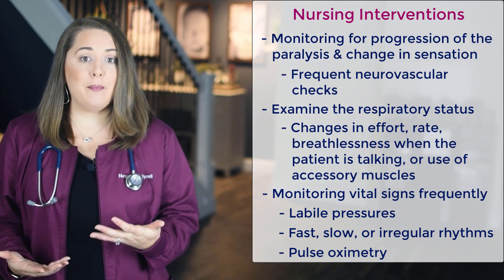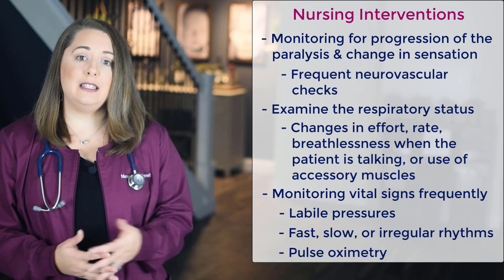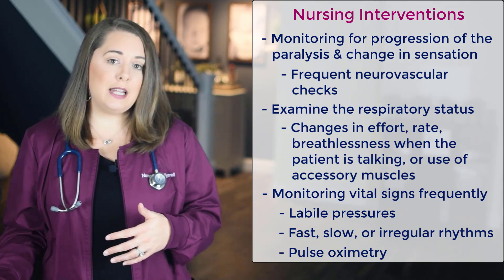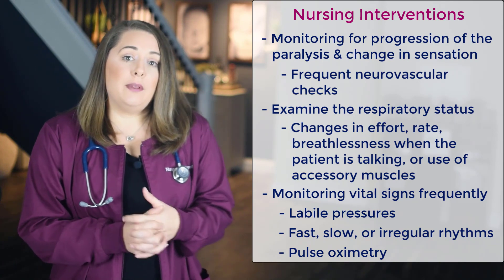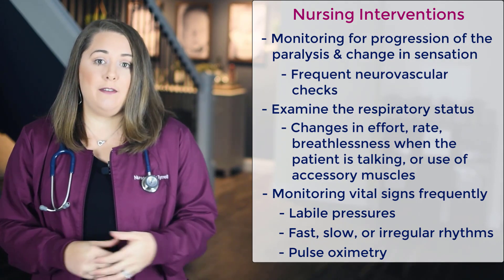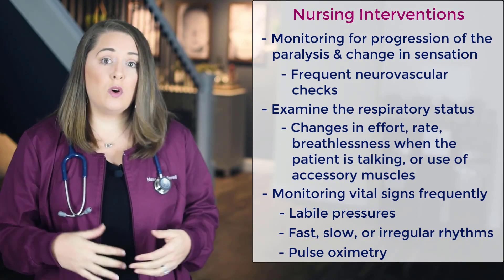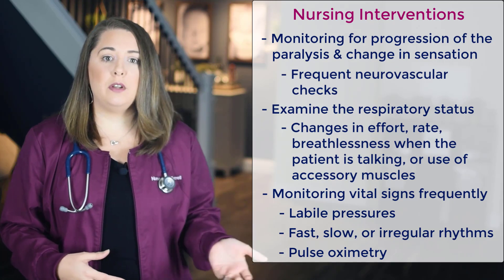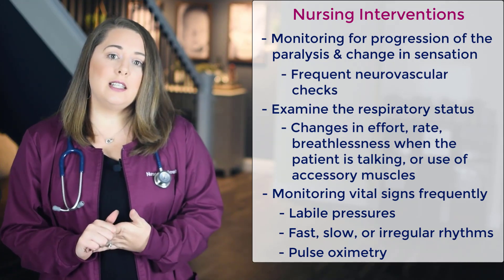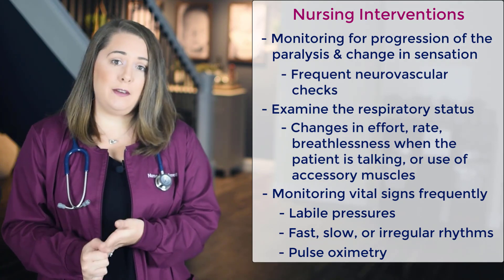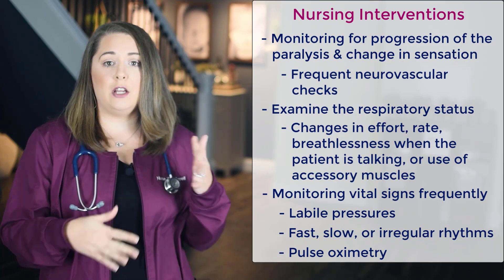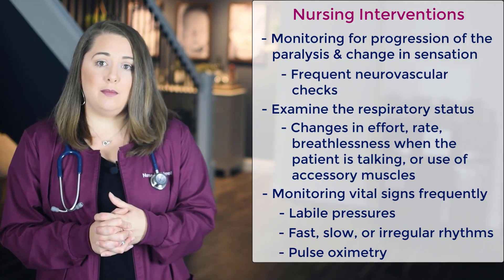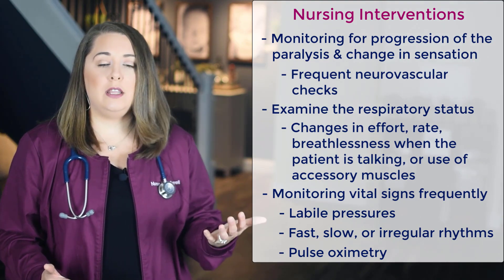The first intervention is monitoring for progression of the paralysis and any change in sensation, doing frequent neurovascular checks — likely every two hours per physician order. Next, frequently examine and monitor respiratory status, looking for changes in effort, rate, breathlessness when talking, or use of accessory muscles such as contraction of the neck, back, or abdominal muscles during breathing. Also monitor vital signs frequently — specifically blood pressure for labile or fluctuating readings, heart rate for fast or slow or irregular rhythms, and pulse oximetry, reporting any abnormalities right away to the healthcare provider.